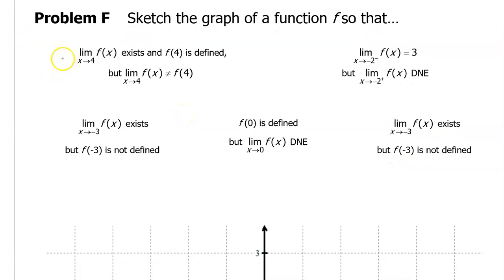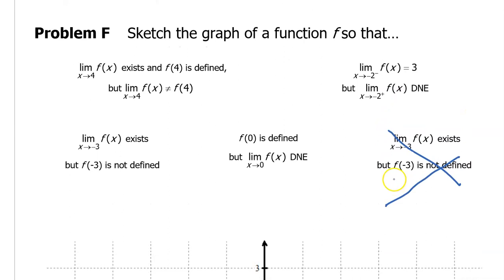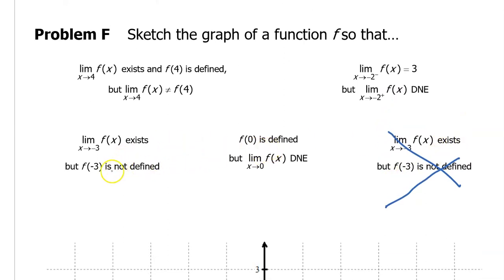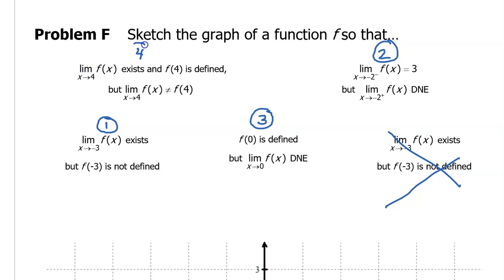Let's do one more problem — these are kind of fun, aren't they? It's like a graphical puzzle. Let's start by putting these conditions in order from left to right. I see negative 3 — that's the lowest number, so that's our first condition. Then negative 2 for the second, 0 for the third, and 4 for the fourth condition.